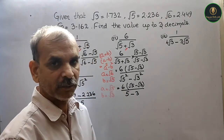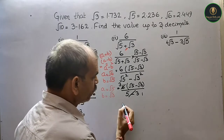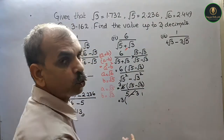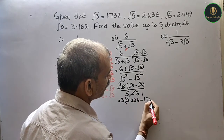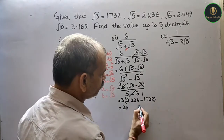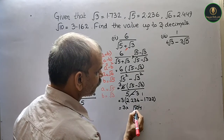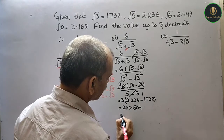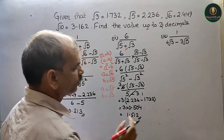तो 2 and 6 आपका cut हो सकता — तो cut करते हैं. तो यह आपका 1 हो गया, यह हो गया आपका 3. So that is equal to: 3 into root 5 minus root 3. Root 5 is 2.236, minus root 3 is 1.732. That is equal to 3 into 0.504. तो आपका answer कितना आगया: 1.512. This is your answer.